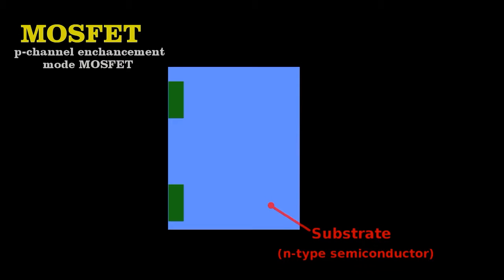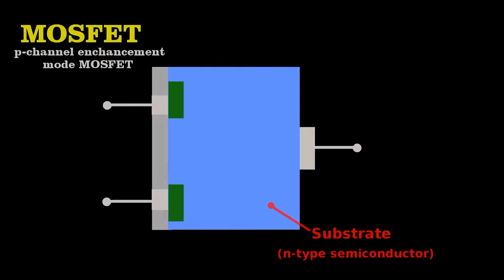Now this seems useless, because no current will ever flow through such an arrangement. But engineers embed this diode sandwich into the same type of semiconductor as the diode ends that touch. Then they place metal contacts at the ends of the diodes and on the block of semiconducting material.